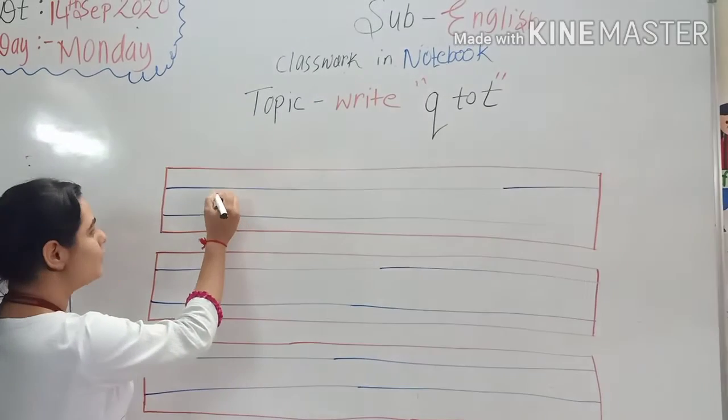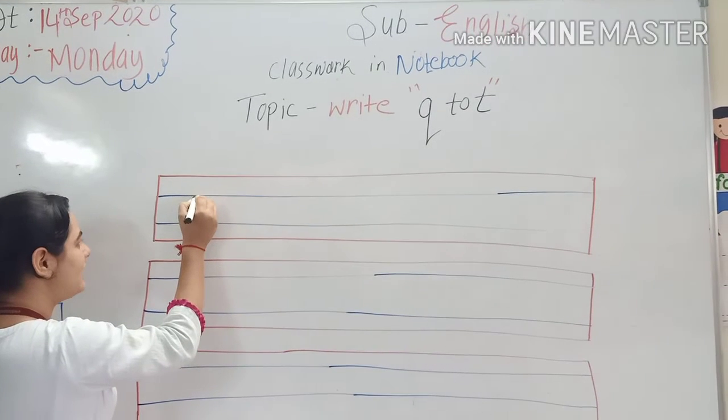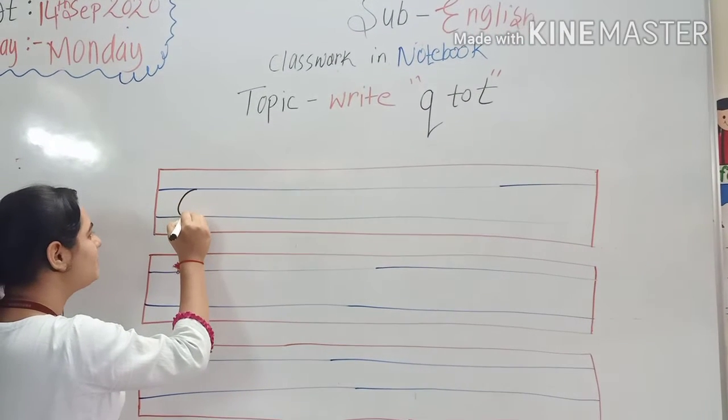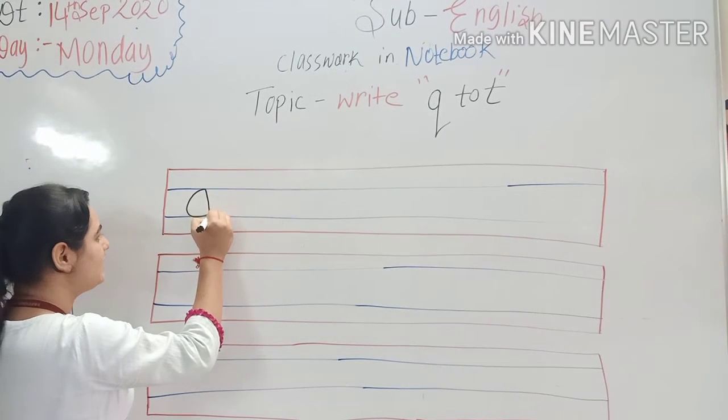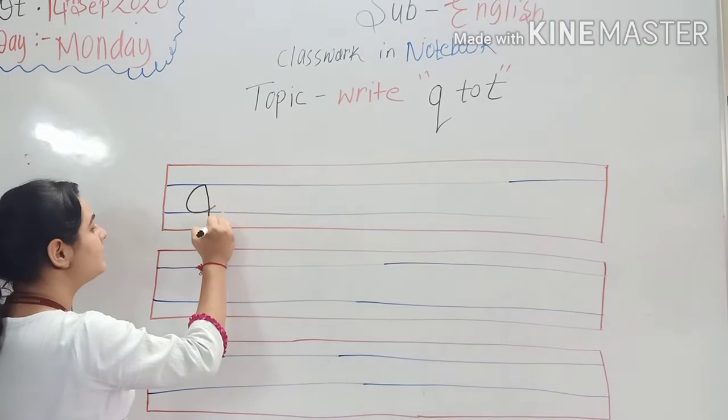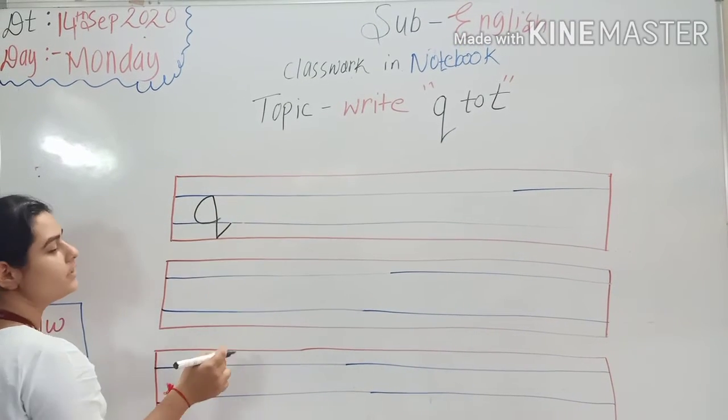Now kids, look at the book and write with me in your notebook. So we write here first Q. In between two blue lines we make curve, then standing line like this and then slanting line. Okay. Q.